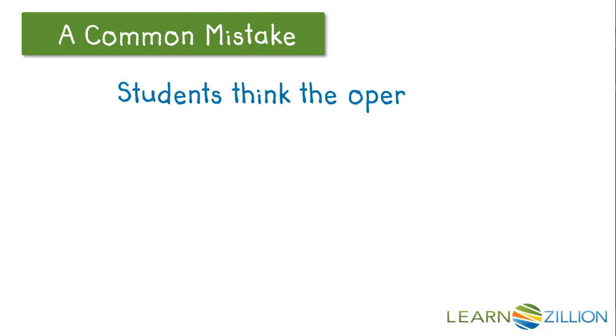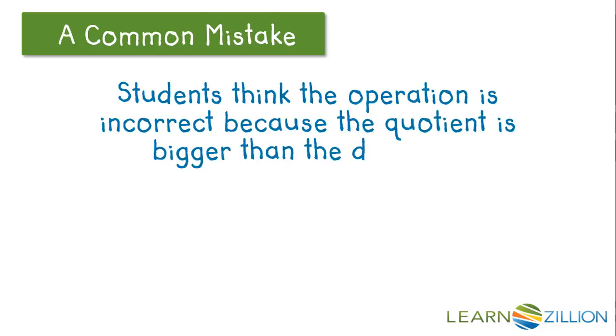A common mistake is students think that the operation is incorrect because the quotient is bigger than the dividend. In this example, 8 divided by 1 fourth equals 32, and they say, huh? Well, let's look at why that is.